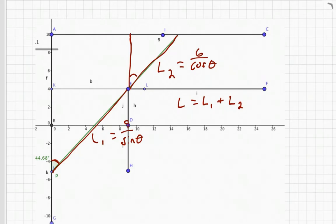With calculus, we can find the derivative of L1 and add it to the derivative of L2 to get the derivative of L. Now, if we rewrite L1 like this, and L2 like this, we can simply use the power rule and the chain rule to find the derivative.